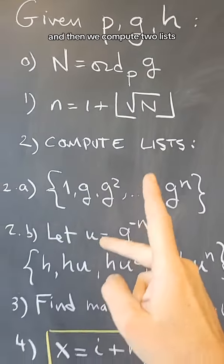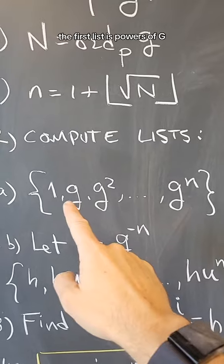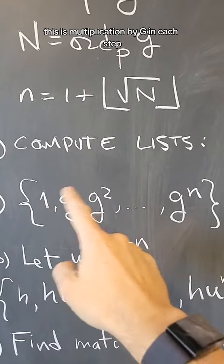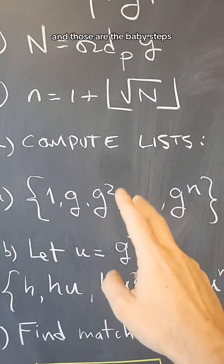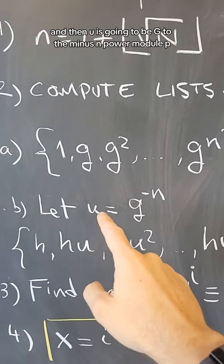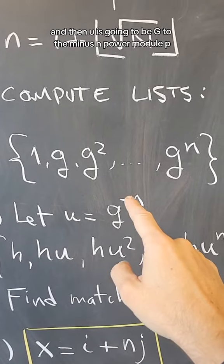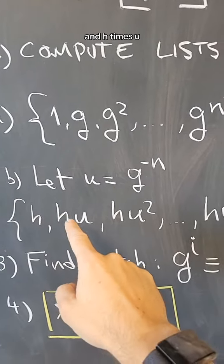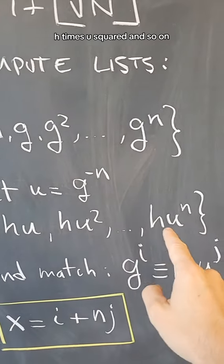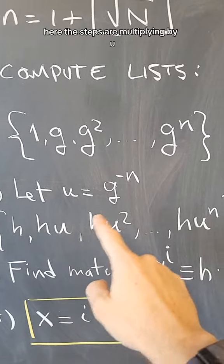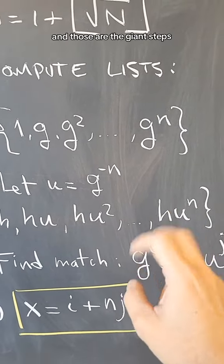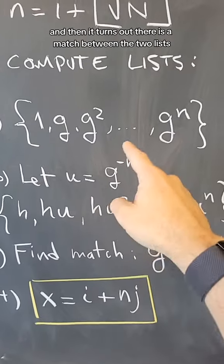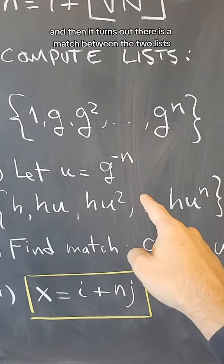Then we compute two lists. The first list is powers of g. This is multiplication by g in each step, and those are the baby steps. Then u is g to the minus nth power modulo p, and we compute h, h times u, h times u squared, and so on. Here the steps are multiplied by u, and those are the giant steps.